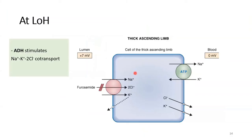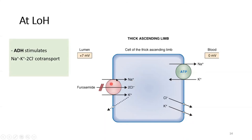There is a major symporter on the luminal surface of the thick ascending limb which takes one sodium, two chloride, and one potassium in one go — so all four ions from the lumen into the cell simultaneously. Potassium is secreted, while sodium and chloride are reabsorbed to the interstitium. The main point is that this symporter plays a very important part in the concentration of urine scenario — we will discuss this under water homeostasis.